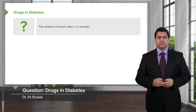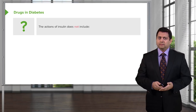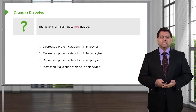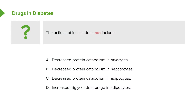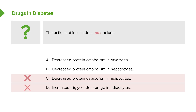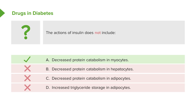Let's just review the actions of insulin. The actions of insulin — which of the following does insulin NOT include: decreased protein catabolism in myocytes, decreased protein catabolism in hepatocytes, decreased protein catabolism in adipocytes, and increased triglyceride storage in adipocytes? Well, increased triglyceride storage in adipocytes is not the correct answer because we know insulin does increase triglyceride. The correct answers are: decreased protein catabolism in adipocytes, decreased protein catabolism in hepatocytes, and decreased protein catabolism in myocytes.